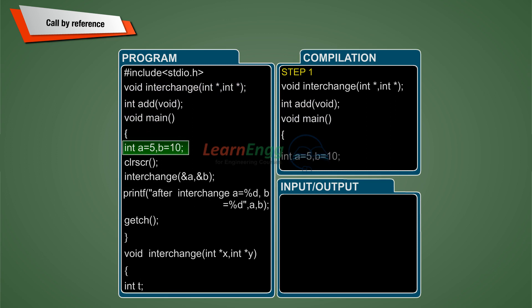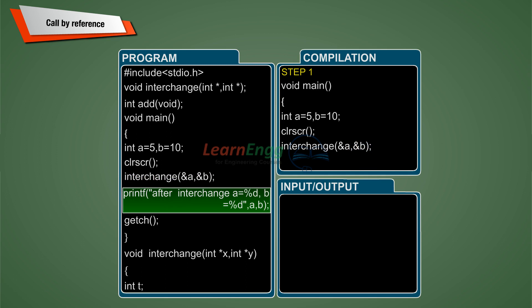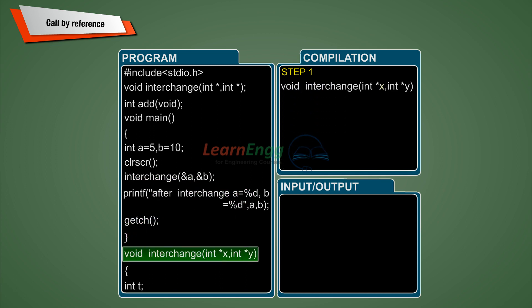First the variable a and b are declared. Interchange of ampersand a comma ampersand b, call the function with two arguments, passes address location number of the value using ampersand operator. Printing of original values a and b before swapping.